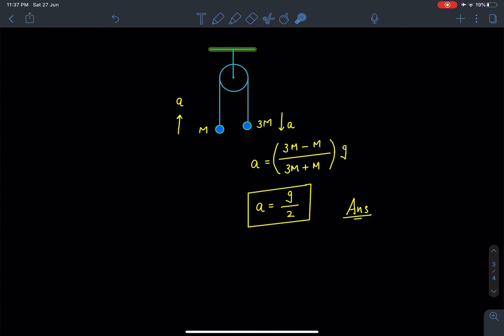Now this is a very simple problem. Directly we can write its acceleration is going to be (m2 - m1)/(m1 + m2)·g. If you substitute the values of m1 and m2, we get the answer as g/2, which is the answer for this particular problem.